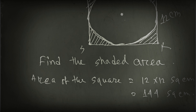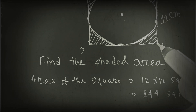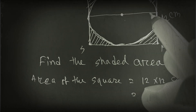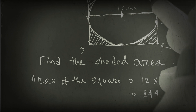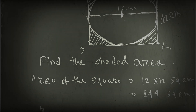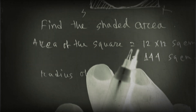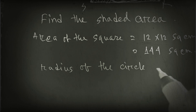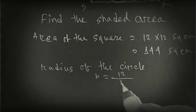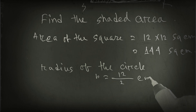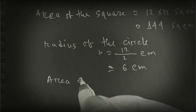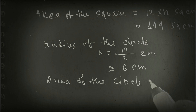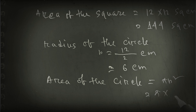The diameter of the circle is also 12 cm, so to find the shaded area we have to find the radius. Radius r equals 12 divided by 2, which equals 6 cm. Area of the circle equals πr², so π multiplied by 6 squared. Using the value of pi, this gives 113.09 square cm.